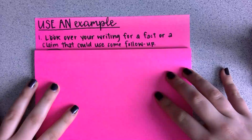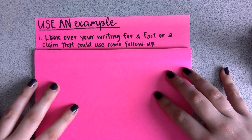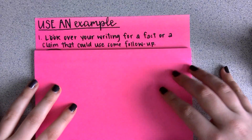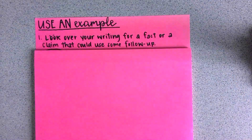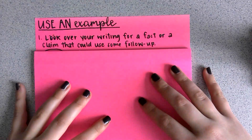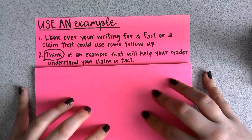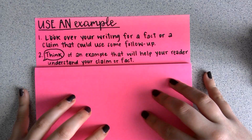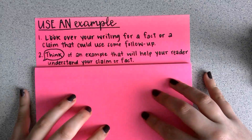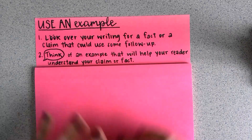The first step for this writing strategy is to look over your writing for a fact or a claim that could be used with some follow-up. Think about something you said that really needs some explaining or more detail on. Then you're going to think of an example that will help your reader understand your claim or fact. This ties directly into citing specific examples when you use writing in your RACE structure.